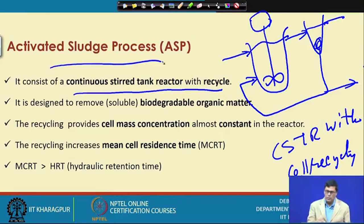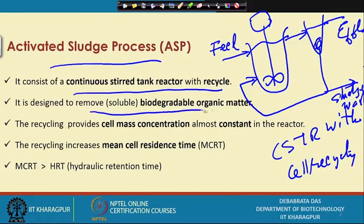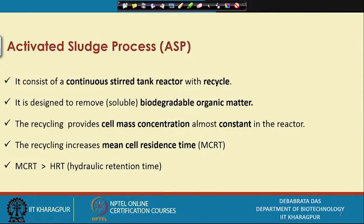The activated sludge process has a feed, an effluent, and sludge wasting. It is designed to remove soluble biodegradable organic matter. When wastewater contains some kind of organic matter, we need to consider how to remove it. If we use any chemical process, we would have to use oxidizing chemicals.